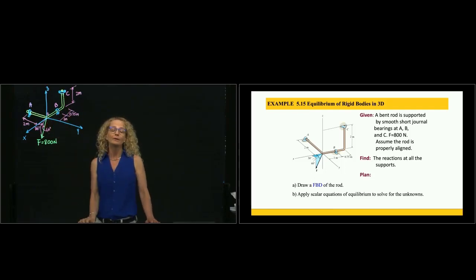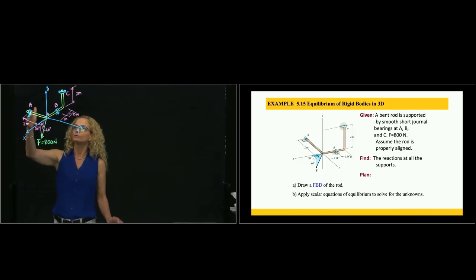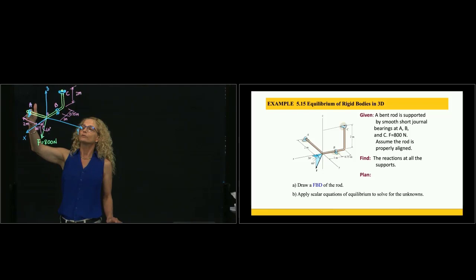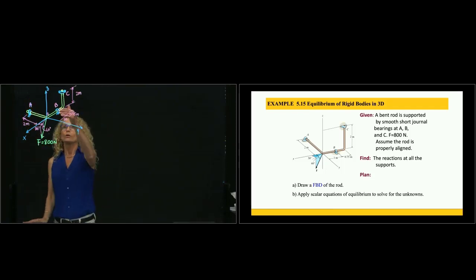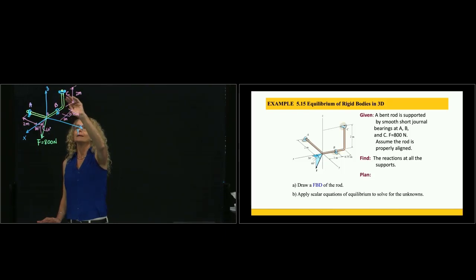Short bearings only restrict the motion perpendicular to their location. For example, if I have a short bearing at A, it will restrict the motion in the plane X and Z. In the case of B, it will restrict the motion perpendicular to that pipe in Y and Z, and in the case of C, it will restrict the motion in X and Y.